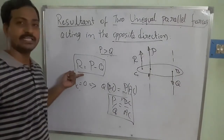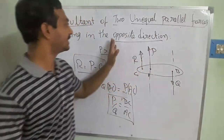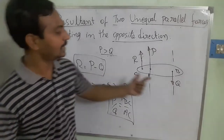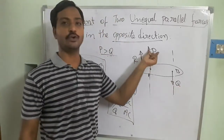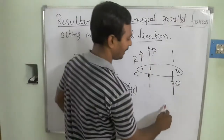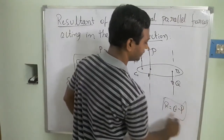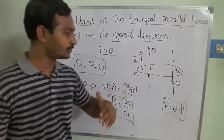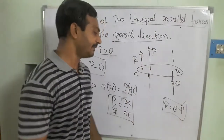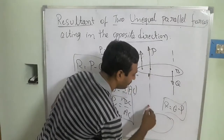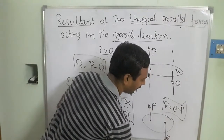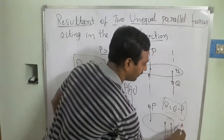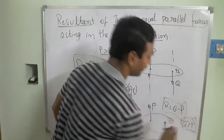In summary, for unequal unlike parallel forces, the resultant R equals the maximum force minus the minimum force. If Q is the maximum force and P is the smaller force, then R = Q minus P. It is not mandatory to always use P minus Q — it depends on which is larger. When Q is greater than P, the resultant component exists on the side of Q.